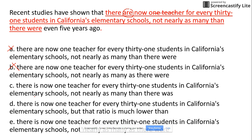While reading I found one more error: it says 'nearly as many than'. We know the correct idiom is 'as many as', not 'as many than'. So we can eliminate C for the same problem — 'as many then' — same error, so C is out.